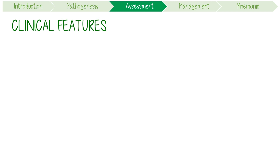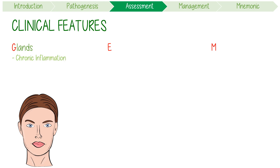Let's now expand on its clinical features by breaking down the GEM issues. G stands for enlarged glands due to chronic inflammation. These are usually firm and non-tender, with either unilateral or bilateral enlargement, and it's most obvious in the parotid glands.